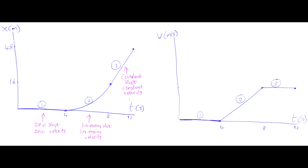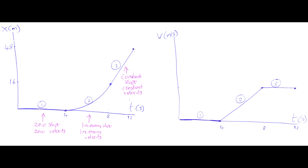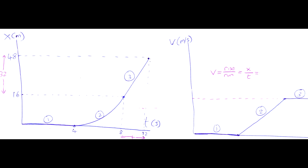But in section three, there is a calculation we can do. We realized it had a constant positive slope, so we drew a constant positive velocity on the velocity graph — but we don't know what that constant positive velocity is. How fast was it going during that period? We can calculate the slope of this section to figure that out. For a displacement-time graph, the slope equals rise over run, which equals displacement divided by time. In this case, that's 48 minus 16 — that's the difference in the y-values.